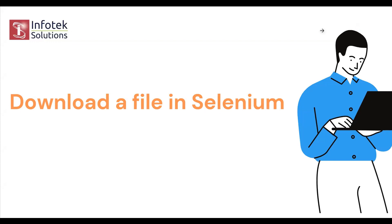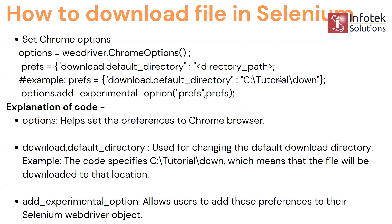Hey, welcome back. In this video we are going to see how to download a file in Selenium. Last time we saw how to upload a file — now we'll see how to download. It's very simple. You'll be using Chrome Options, and you need to set the Chrome Options using preferences. You have to mention the download default directory and the directory path where you will store the downloaded file.